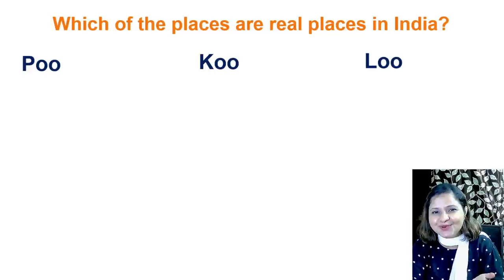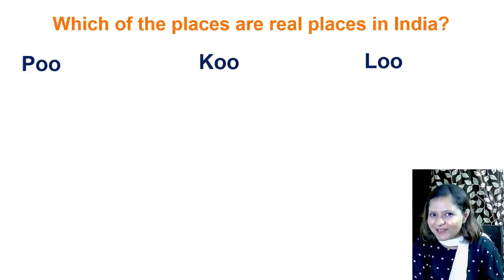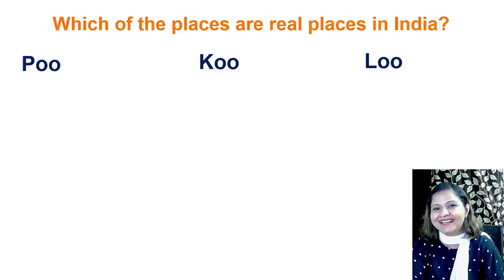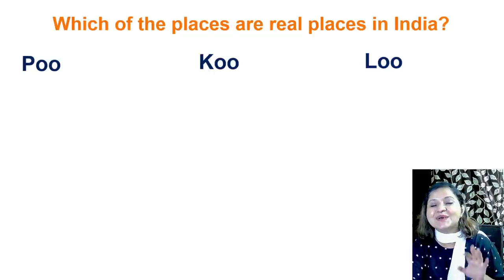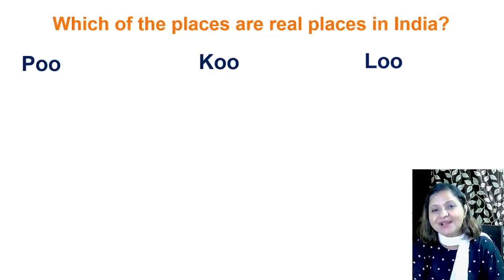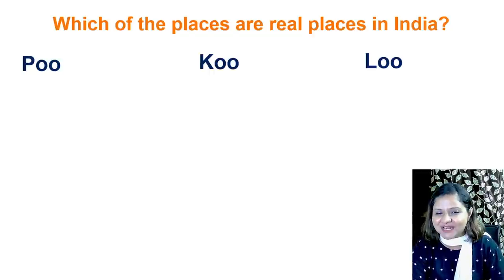For instance: Poo, Koo, or Loo — could you guess it? The answer is Poo. Poo is a real town in Himachal Pradesh.